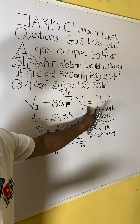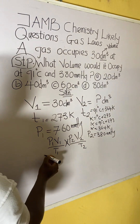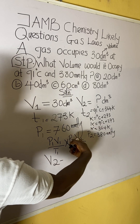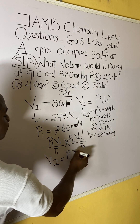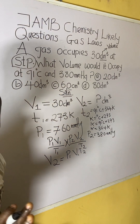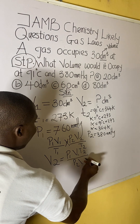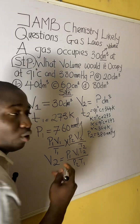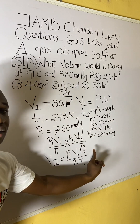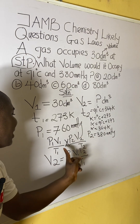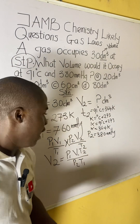The general gas equation is: P1V1/T1 = P2V2/T2. We are making V2 the subject. Cross-multiplying, V2 = (P1 × V1 × T2) / (P2 × T1). In other words, you multiply everything on the diagonal — P1, V1, and T2 — and divide by the remaining two: P2 and T1.